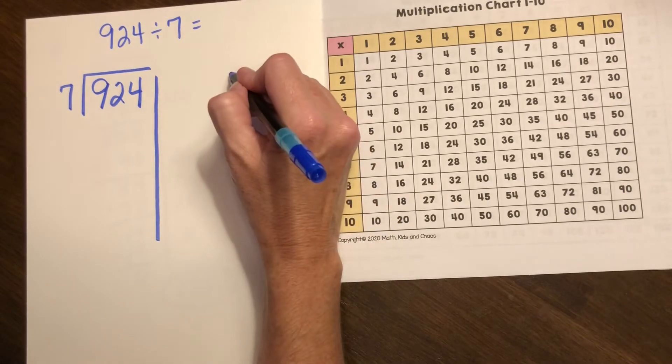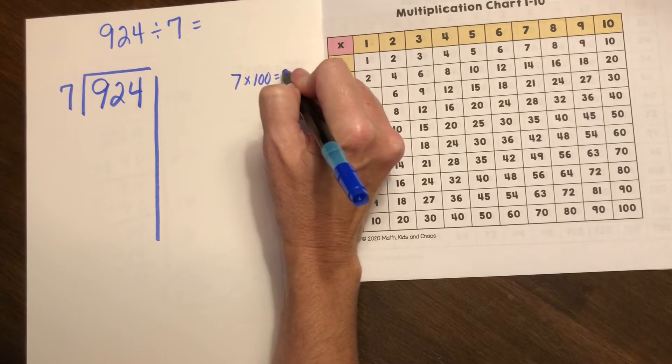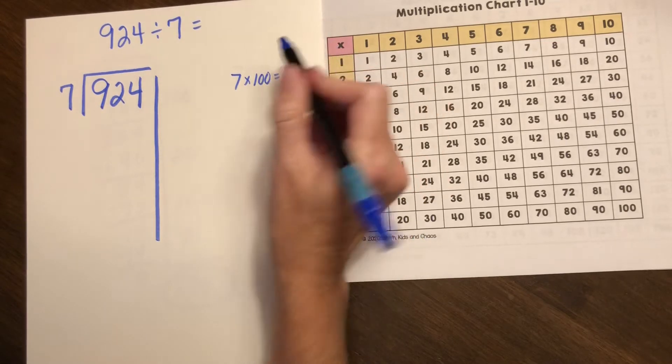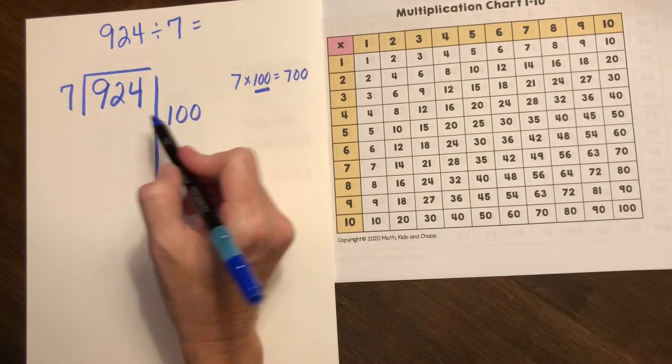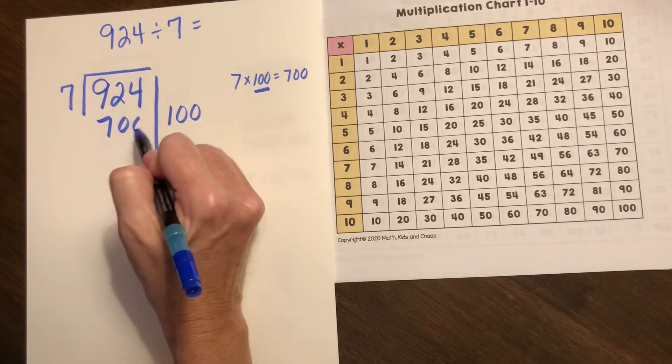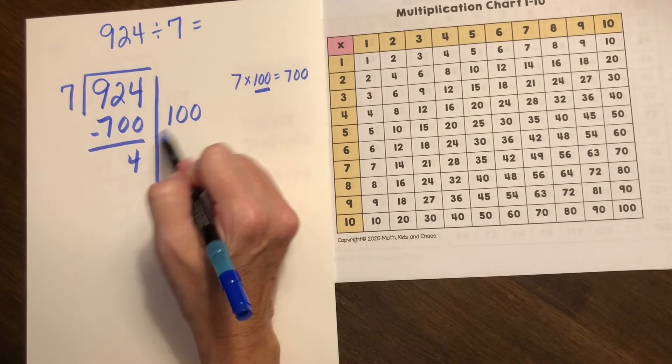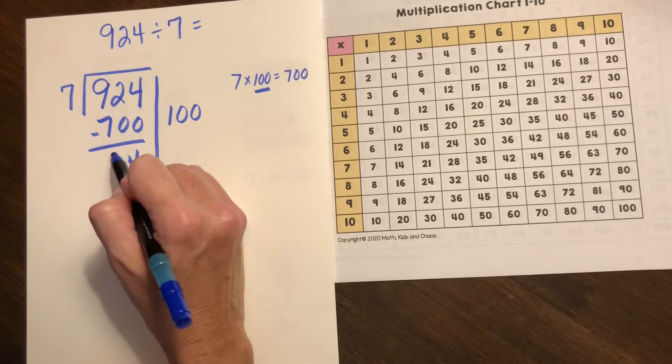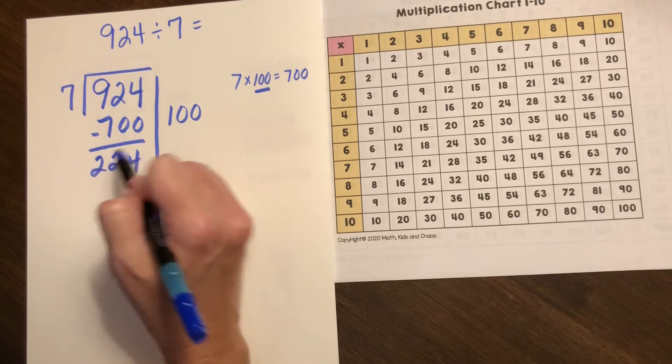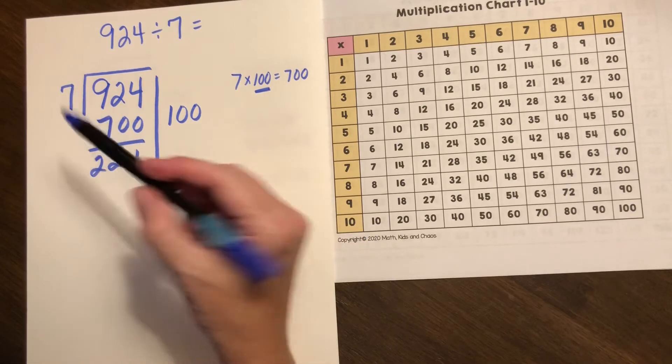I see it's in the seven in the hundreds so I know that seven times a hundred equals 700. So I know there's at least a hundred groups of seven in nine hundred and twenty-four. So I can take 700 out because we've already grouped them into groups of hundred and there's 224 left to be divided into groups of seven.